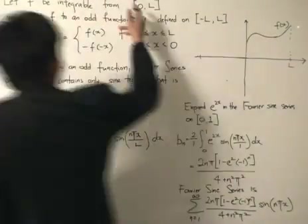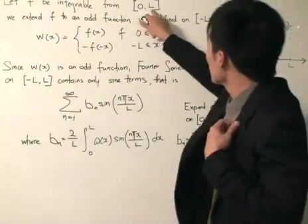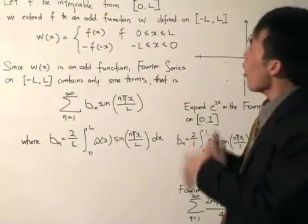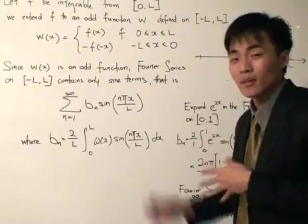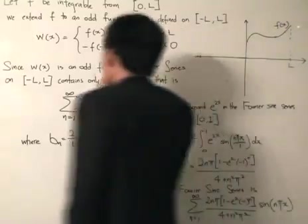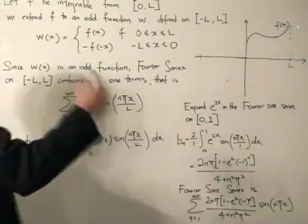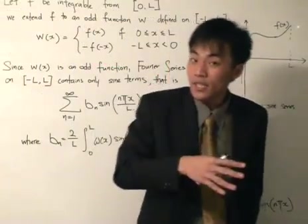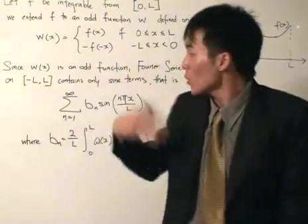So the objective is to find the Fourier sine series of a certain function f. Now in this case, let f be integrable from 0 to L. Notice the difference that it's not -L to L. So in a way, all the definitions that we learned from the past about the Fourier series doesn't really apply because the endpoints are different. But it doesn't matter because we're going to use the property of certain functions. Cosine series, we use the even property. So this time we're going to use the odd property.